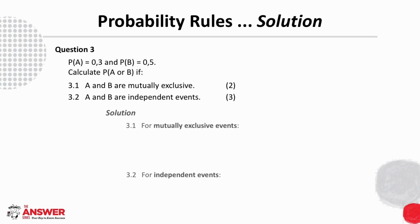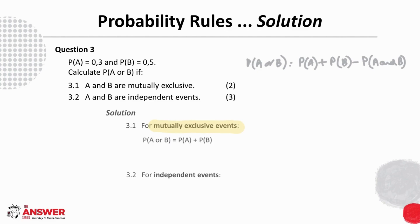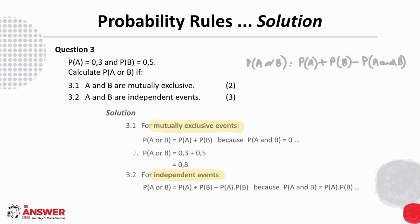Keeping the equation that is true for any two events in mind: for mutually exclusive events, P(A and B) is zero, so the equation simplifies and we can substitute the values to find P(A or B). For independent events, P(A and B) equals the product of the individual probabilities, so again we substitute our values and solve for P(A or B).